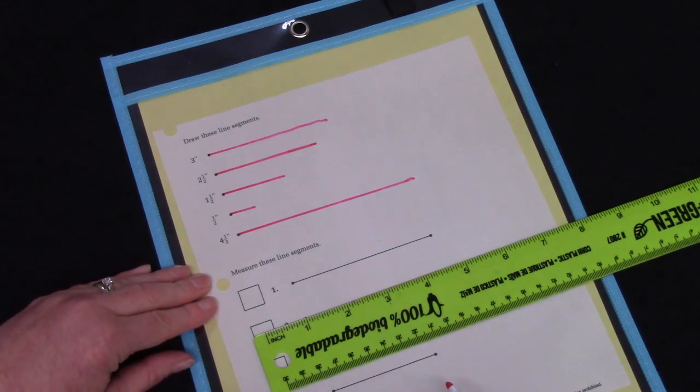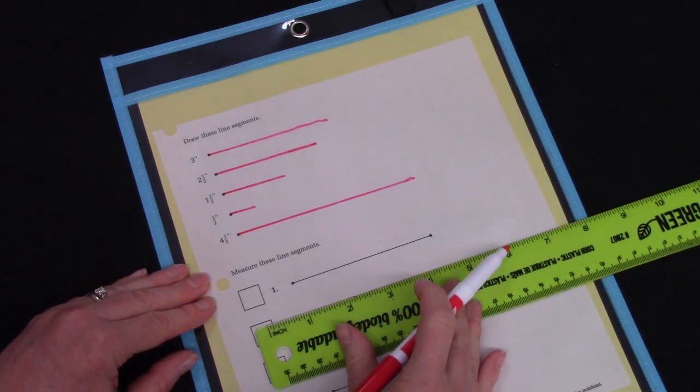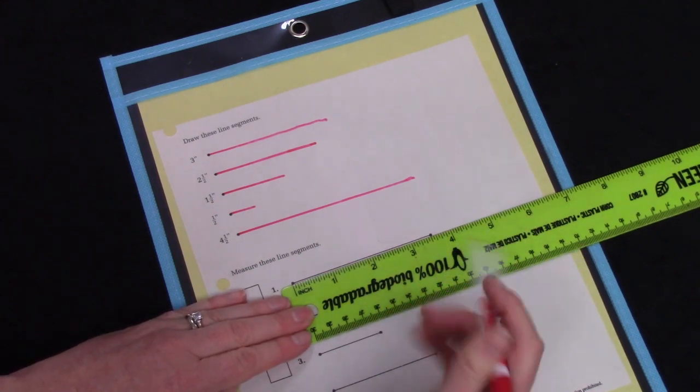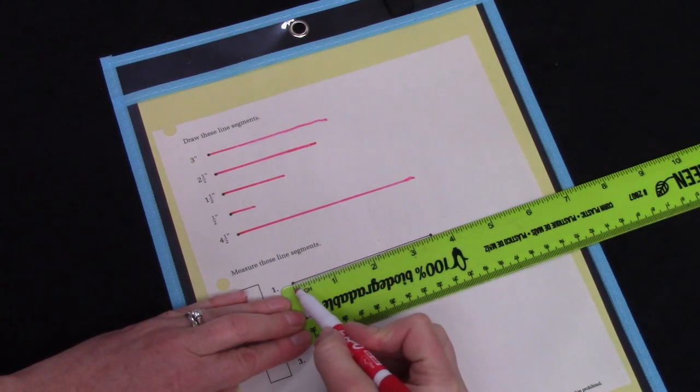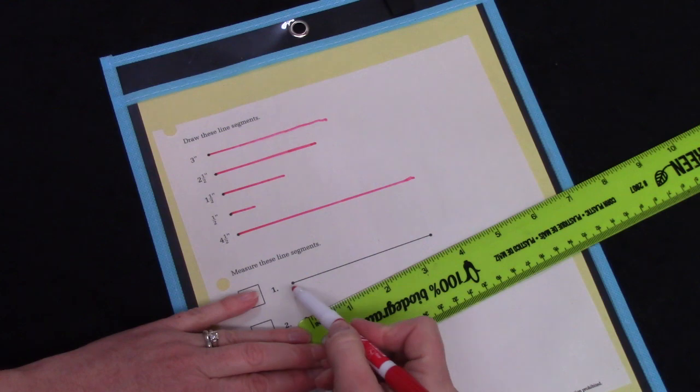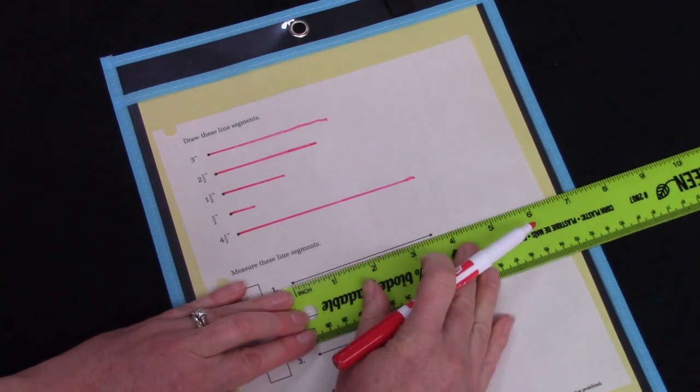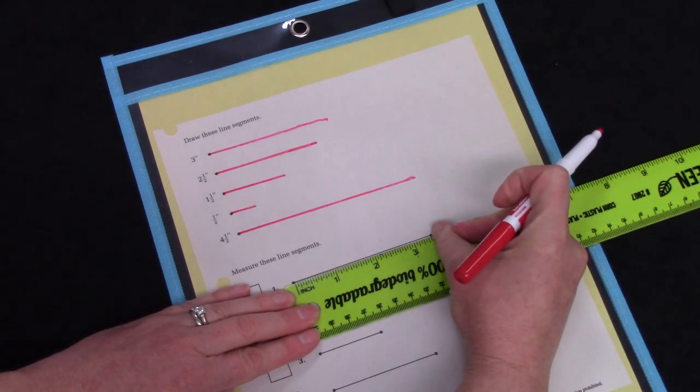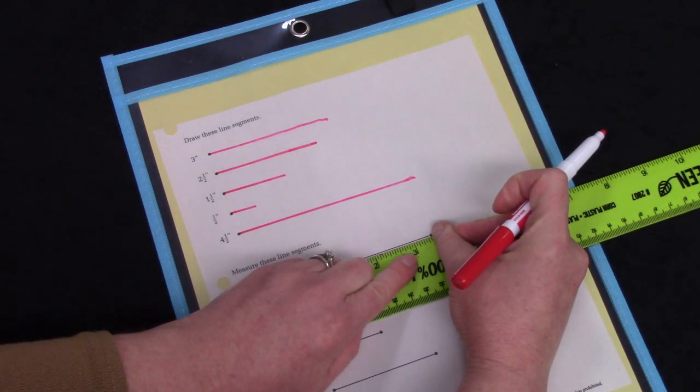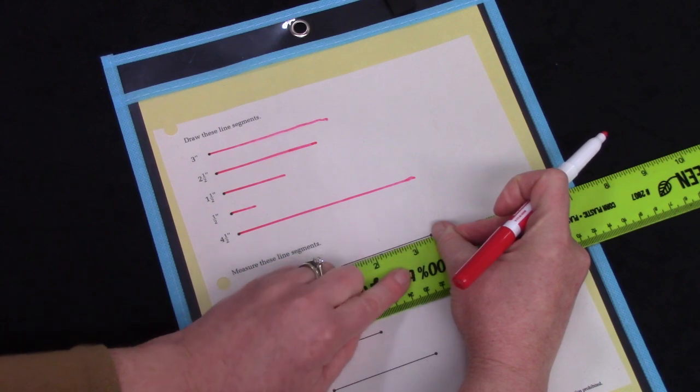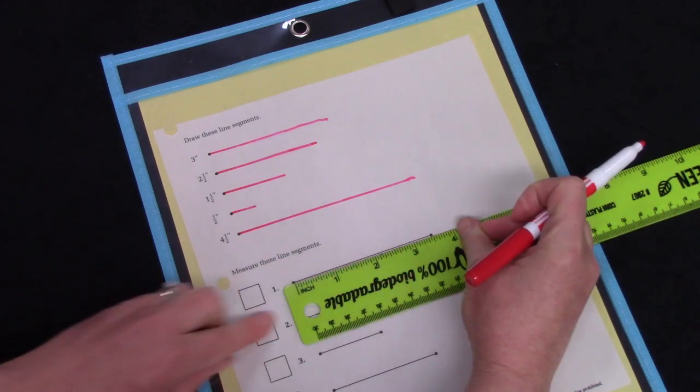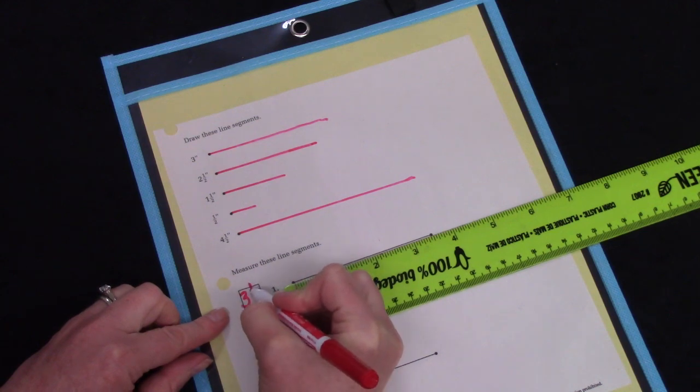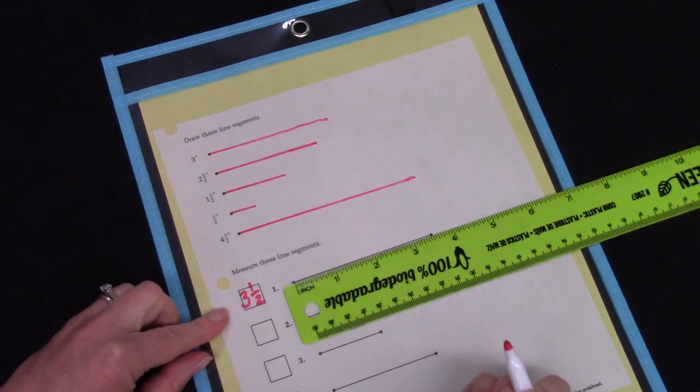On the bottom half of our page is asking us to measure each of the line segments. When you measure, you are going to put your zero line right at the end of the line and you measure all the way along. How long is this one? Three and, did it go all the way to four? No, it's halfway between the three and the four. So this would be three and one half.